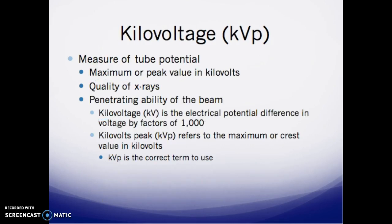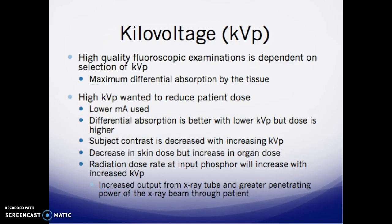Next is kilovoltage — KVP. It's a measure of the tube potential, the maximum or peak value in kilovolts, and represents the quality or penetrating ability of the beam. KVP is the electrical potential difference in voltage by factors of 1,000. Kilovolts peak refers to the maximum or crest values in kilovolts. High-quality fluoroscopic examinations are dependent on the selection of KVP.